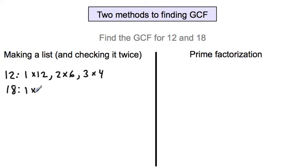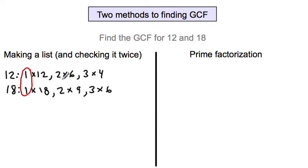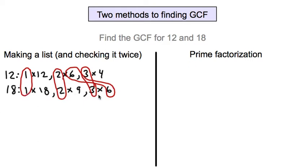Factors for 18: 1 times 18, 2 times 9, 3 times 6, and that's it. Once you have your factors listed, you're going to circle the ones that both lists have in common. 1 is in common, 2 is in common, 3 is in common, and 6 is in common. The one that is the greatest out of all those is 6. So our answer to finding the greatest common factor of 12 and 18 is 6.